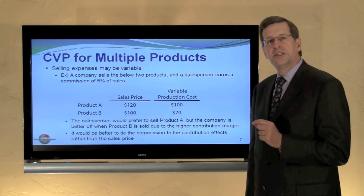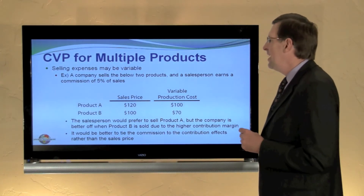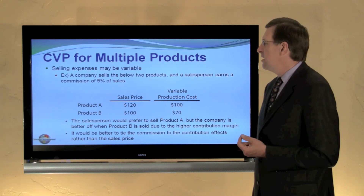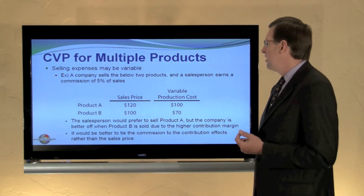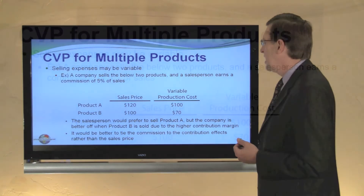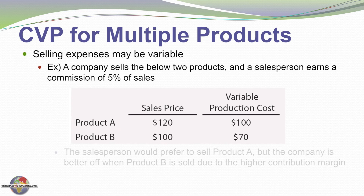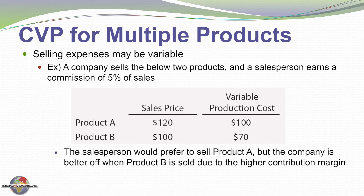Closing this module, consider how selling expenses can influence contribution margins and profitability. Take a company that sells two products where the sales force earns 5% of sales. Product A has a $120 sales price and a $100 variable production cost, giving a $20 contribution margin. Product B has a $100 sales price and a $70 variable production cost, giving a $30 contribution margin. As a salesperson, which would you rather sell?